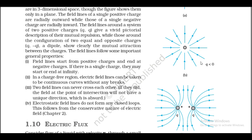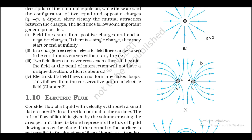Field lines follow some important general properties. First, field lines start from positive charges and end at negative charges; if there is a single charge, they may start or end at infinity. Second, in a charge-free region, electric field lines can be taken to be continuous curves without any breaks. Third, two field lines can never cross each other — if they did, the field at the point of intersection would not have a unique direction, which is absurd. Electrostatic field lines do not form any closed loops; this follows from the conservative nature of the electric field.